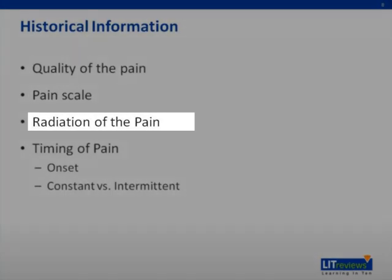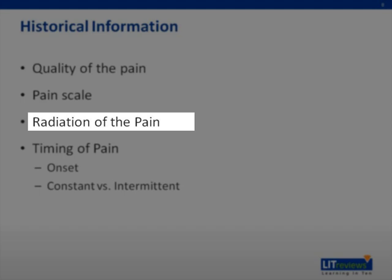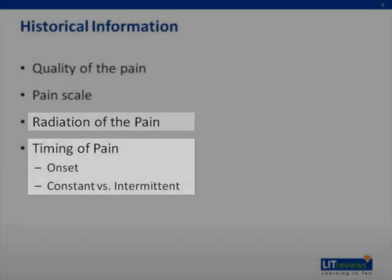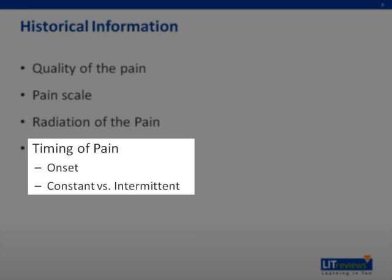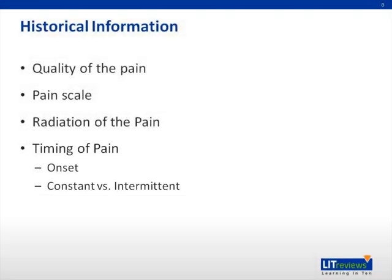Another important question is whether the pain radiates anywhere — does it go to the flank, into the groin, or into the vaginal area? And then the timing of the pain: when did it start? Did it start suddenly, or intermittently and progressively worsening? Is the pain constant or intermittent? All important historical factors that can really help figure out what the patient is presenting with.